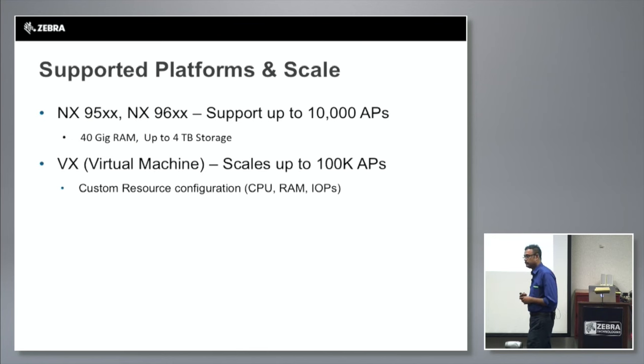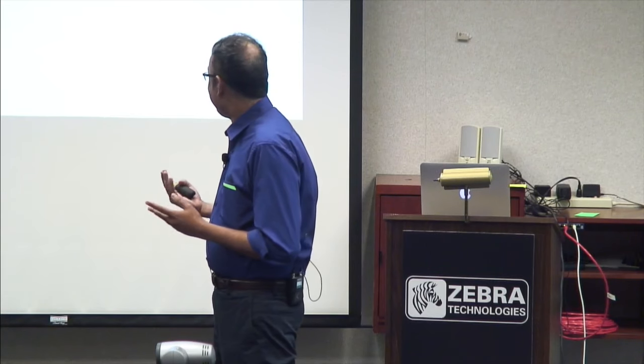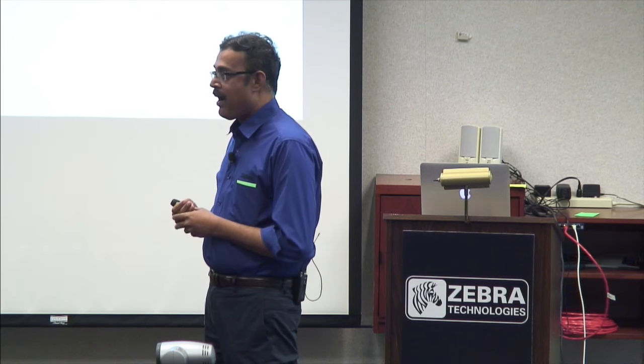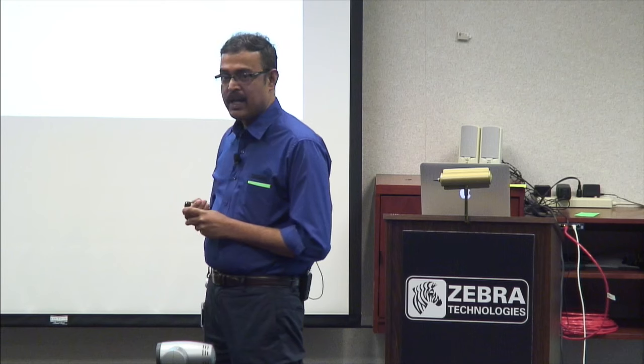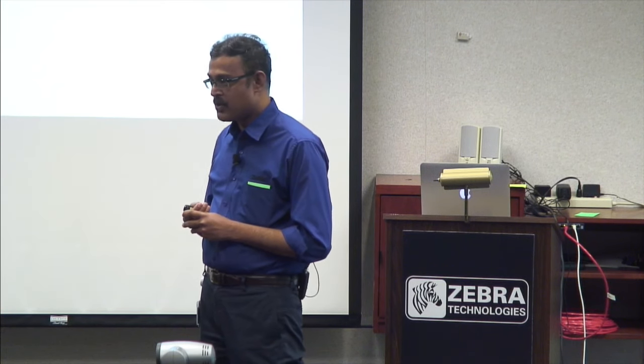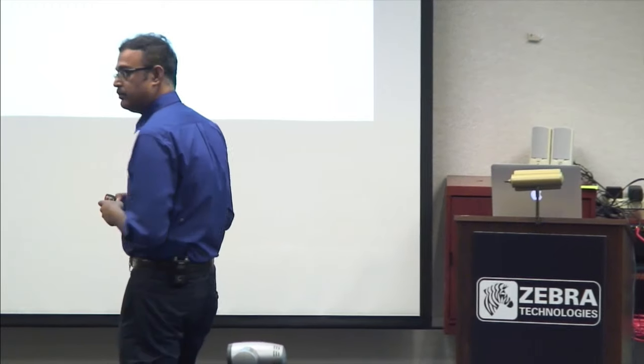What would the resource configuration be for that? It depends on the scale requirement. For 100,000 access points, we're looking at 24 to 32 core CPUs — two or three processors with that many cores — and about 128 to 256 GB of RAM. For every 10,000 APs, you're looking at about 3,000 IOPS on the storage.